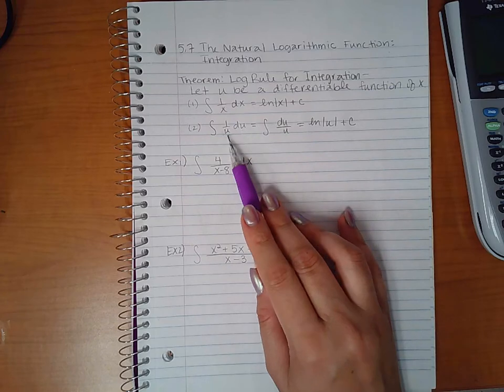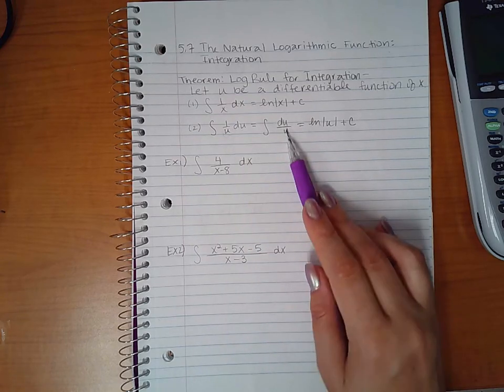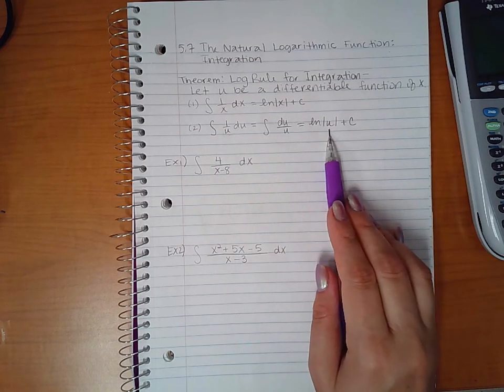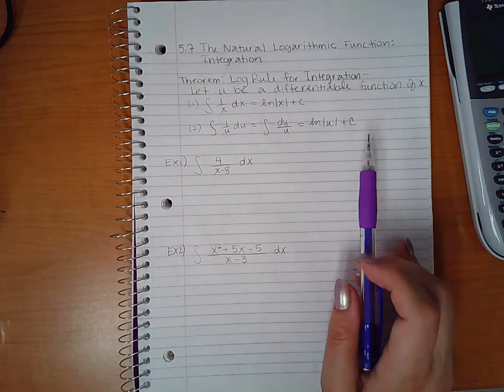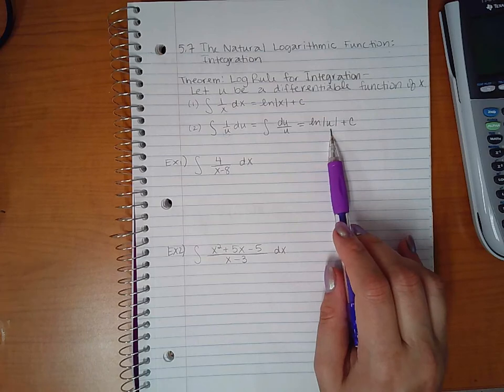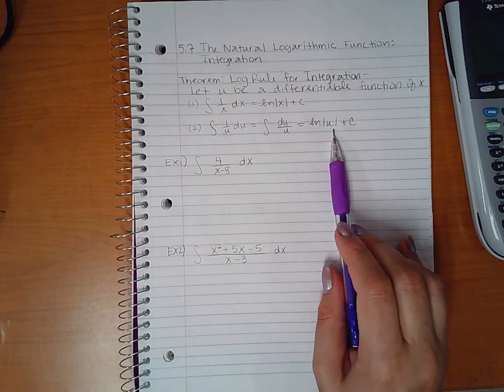Then du is the derivative of that. Another way to write it is du over u or dx over x, you get the ln of that u function, absolute value of that u function, plus c. The only time you don't need the absolute value function is if this is going to be positive no matter what x is.